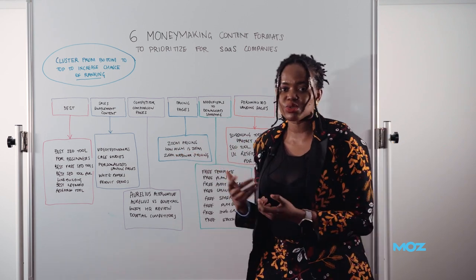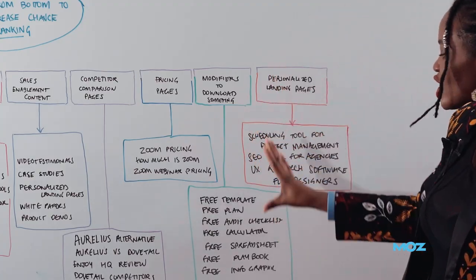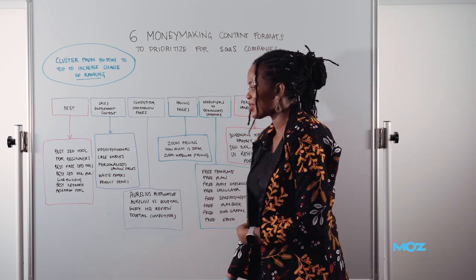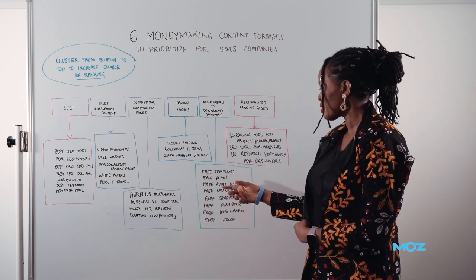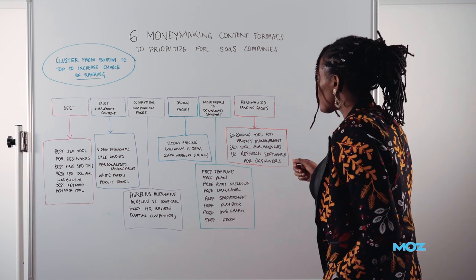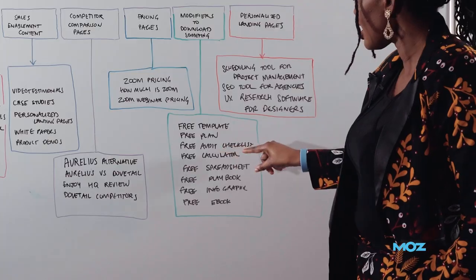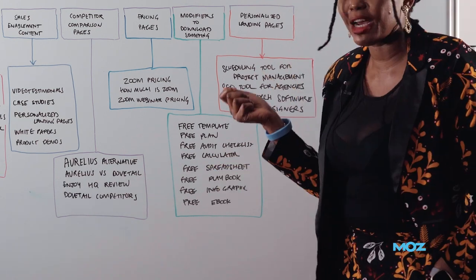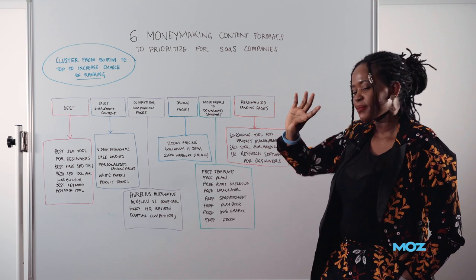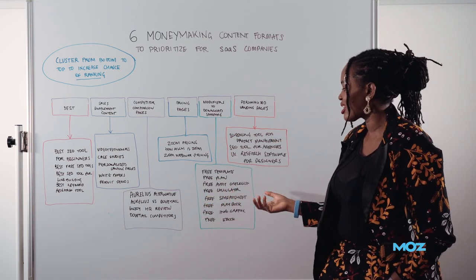Next one: modifiers to download something. This is an essential group of content to create because it allows you to capture emails, and you need those emails to give your email team something to build content around. Examples: free templates, free plans. The word 'free' is a magic word that gets people to listen and click. When doing keyword research, you can filter by typing in words like template, plan, checklist, calculator, spreadsheet, playbook, infographic, or ebook — and the keyword results will show only information mentioning these things. You can export that into a Google spreadsheet and use it to start creating content.